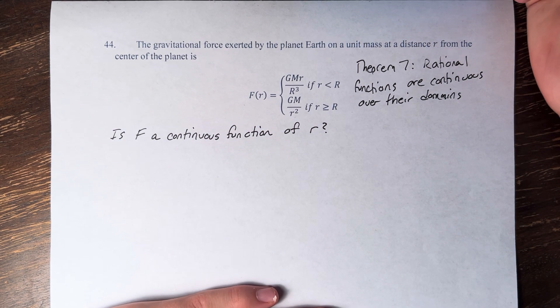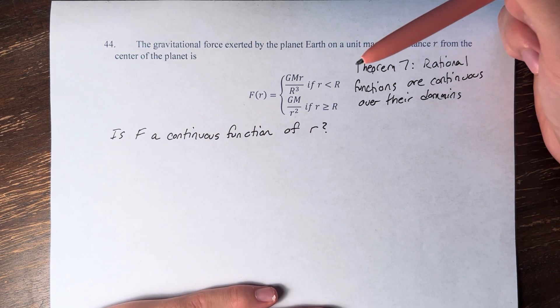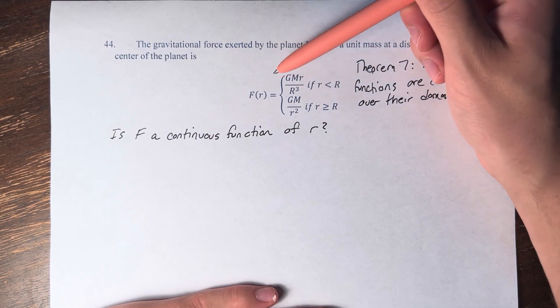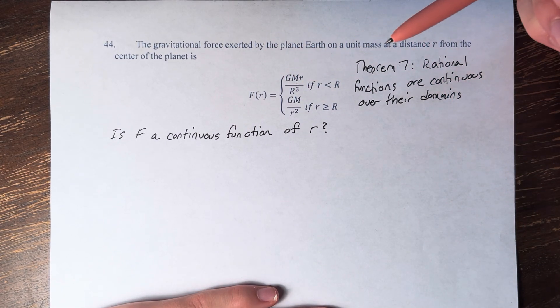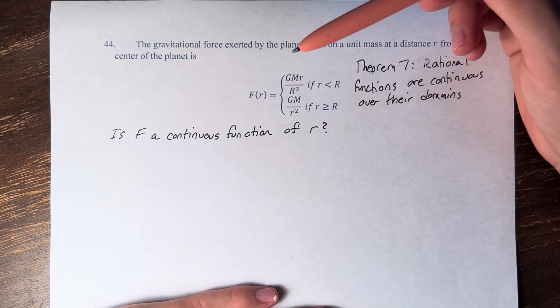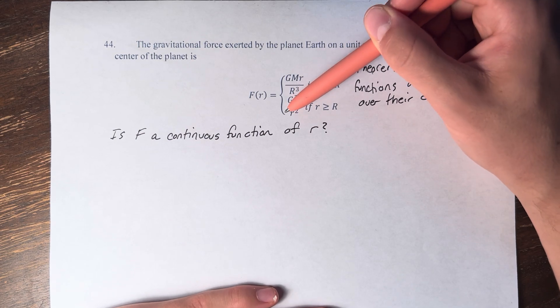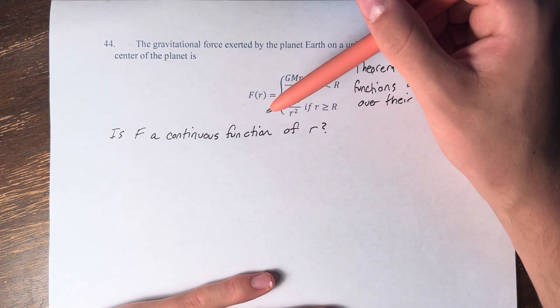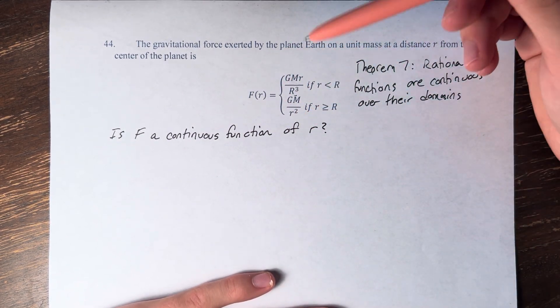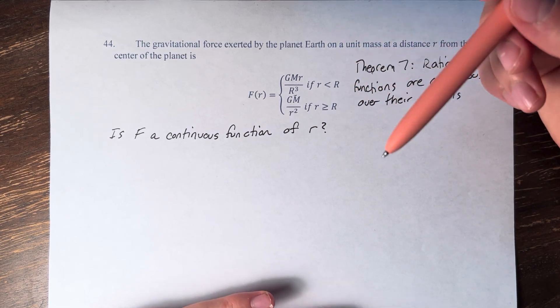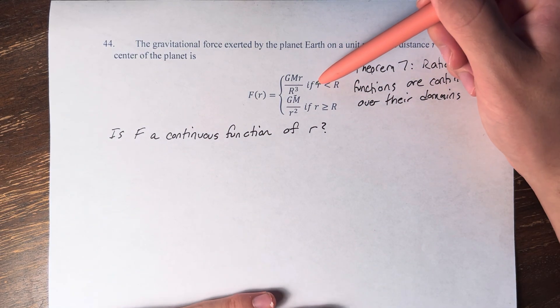And therefore, we can say that GMr over r cubed is continuous, and GM over r squared is continuous. And these functions are continuous at all points except for the point where they intersect, where little r equals big R.